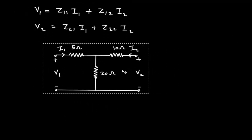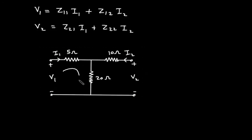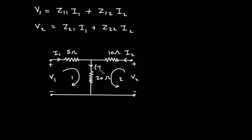Let's define mesh number 1 and mesh number 2. The current through the 20 ohm resistor will be I1 plus I2.